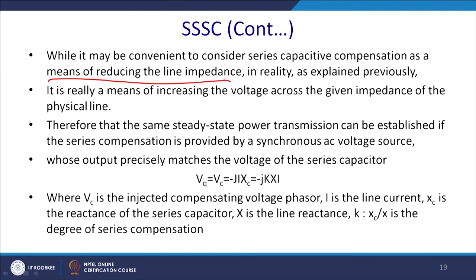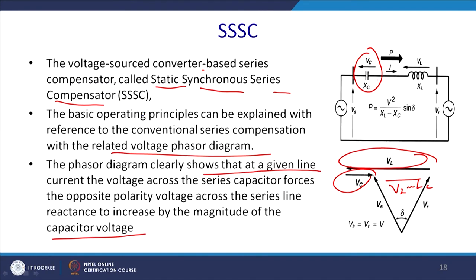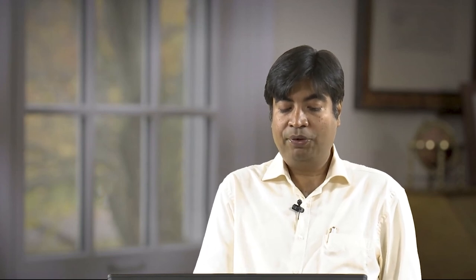In reality, series compensation is a means of increasing the voltage across the given impedance of the physical line. The voltage source acts in quadrature with V_s since it is a capacitor. Therefore, the same steady-state power transmission can be established if series compensation is provided by a synchronous AC voltage source — that is the basic principle of operation of the Triple SC, whose output precisely matches the voltage of the series capacitor.